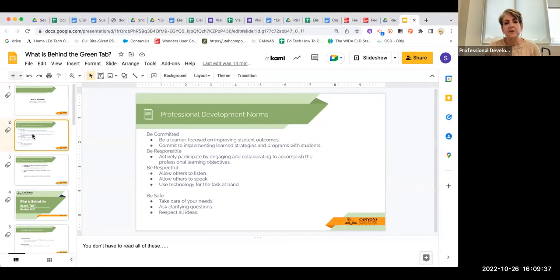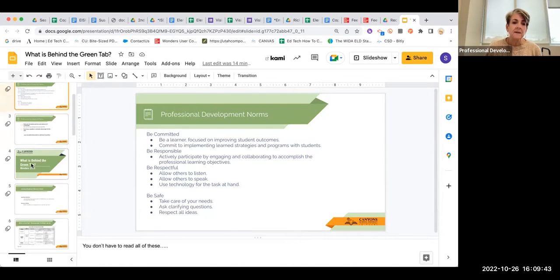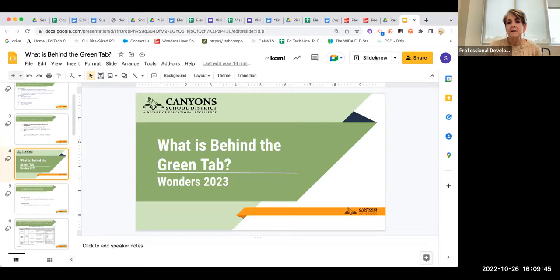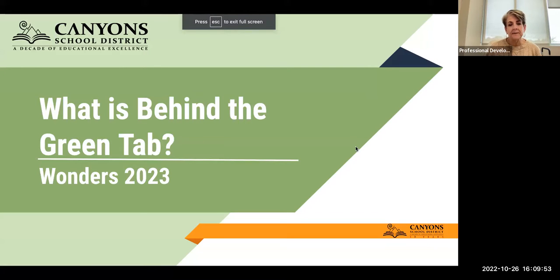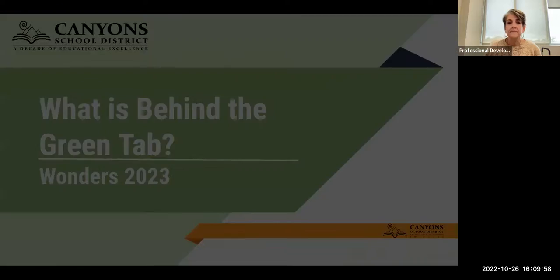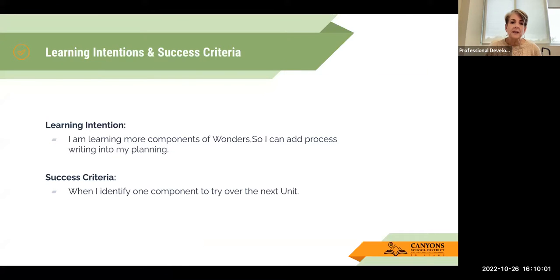So just professional development norms: be committed, be responsible, be respectful, and be safe. So let's get started right here. What is behind the green tab? And why do I want to be able to see it? So we're going to just talk about this for a few minutes in the next 30-ish minutes going forward. Your learning intention today is I am learning more components of wonders so I can process writing into my planning. You'll know you're successful when you identify one component to try over the next unit.